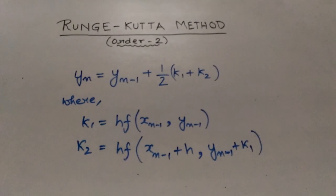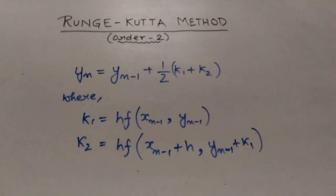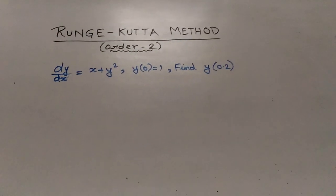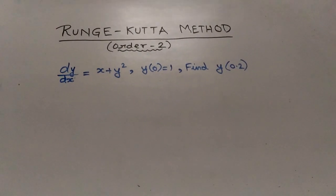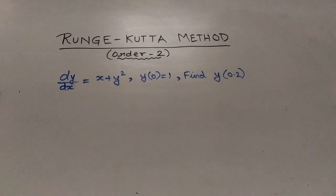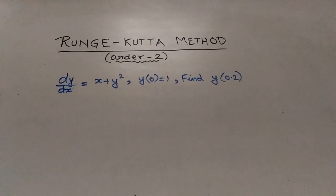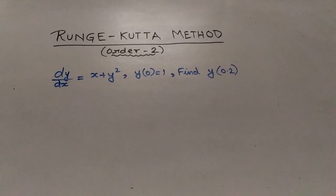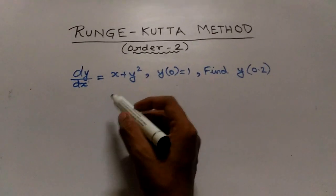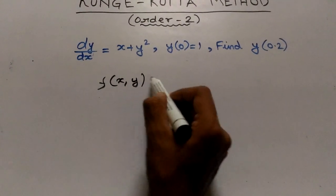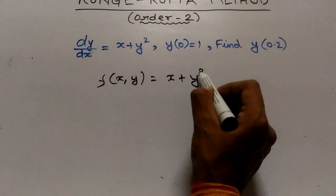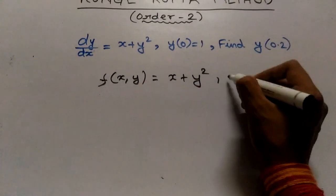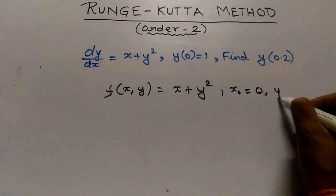Now I will show you an example to explain it more clearly. The question is dy/dx equals x plus y squared. Initial condition is y at x equals 0 is 1, and our question is to find y at x equals 0.2. First of all, we will write the function. Our function is f(x,y) equals x plus y squared.